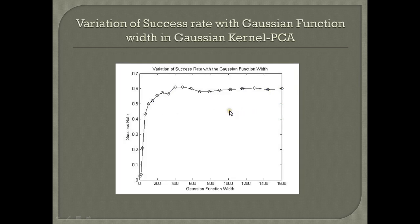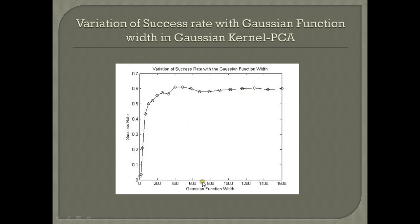This graph shows the variation of the success rate of the Gaussian kernel with the width of the Gaussian kernel — that is, the sigma squared component — which controls the performance of the Gaussian kernel PCA. It can be seen that as the width increases, initially the success rate increases. But after reaching a certain threshold width, the performance almost remains the same even though the Gaussian width is further increased.